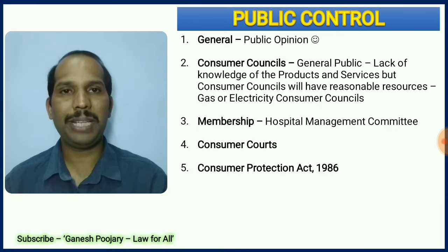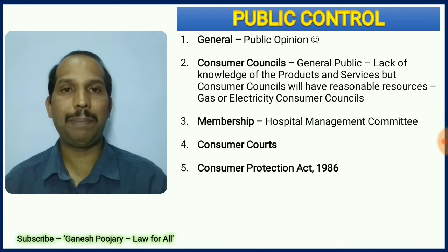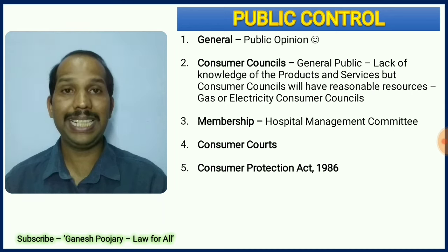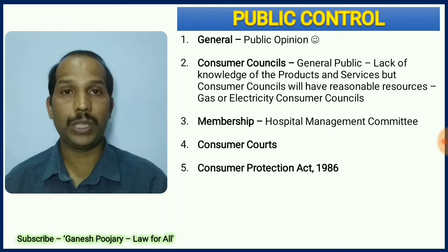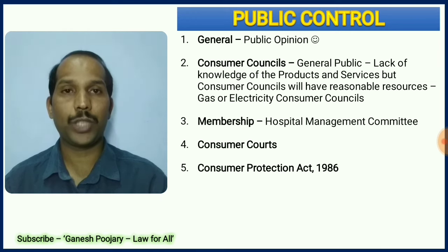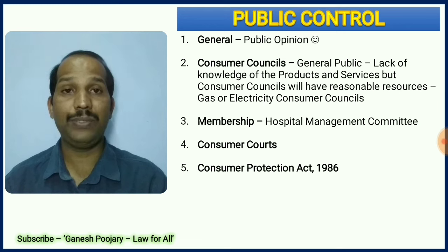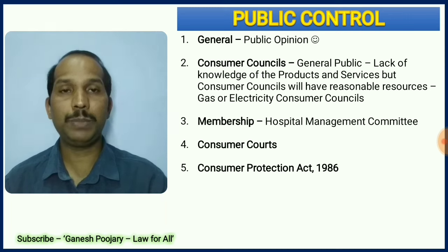Public corporations exist for the benefit of the public, so the public is the last form of control available over them. The first way is by making public opinion. The second way is through consumer councils — not all individuals are capable of commenting on all products or services, but consumer councils where experts are available can make opinions and comments on public corporations, thereby controlling them.